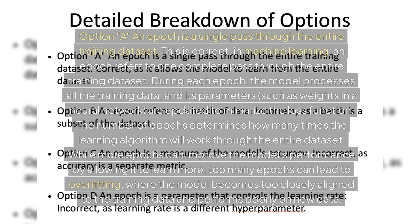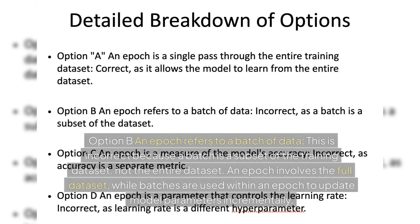The number of epochs determines how many times the learning algorithm will work through the entire dataset. While more epochs can improve the model's performance by allowing it to learn more, too many epochs can lead to overfitting, where the model becomes too closely aligned to the training data and performs poorly on new data.